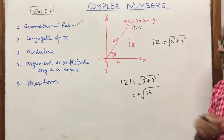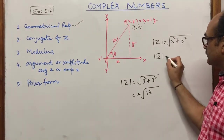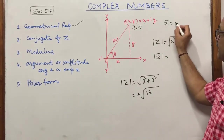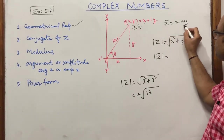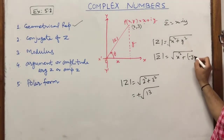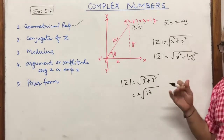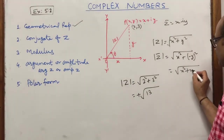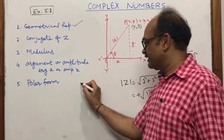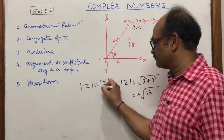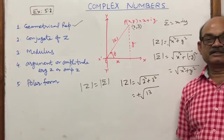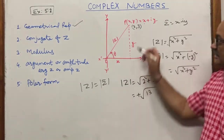If we calculate the modulus of z-bar, for x minus iota y we get √(x² + (−y)²) = √(x² + y²). So the conclusion is that |z| equals |z-bar| — they are always equal.